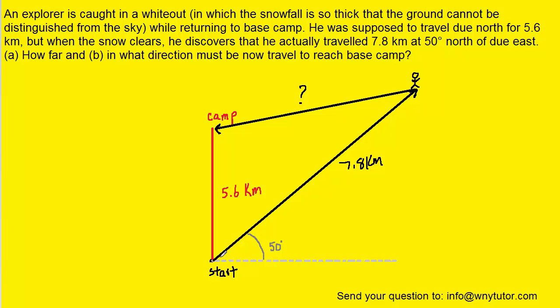Now what we can do is call the vector from when the Explorer traveled from start all the way to this point right here, we can call that vector A. And then the vector that we're trying to figure out we can call vector B. And what we'll do is set up a table to keep this information organized.